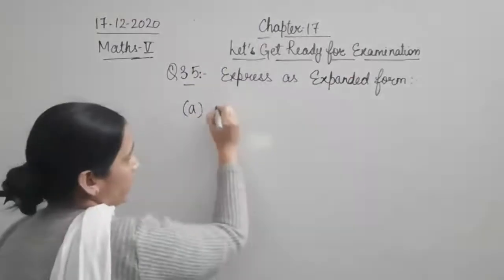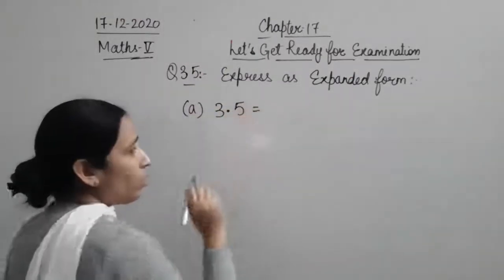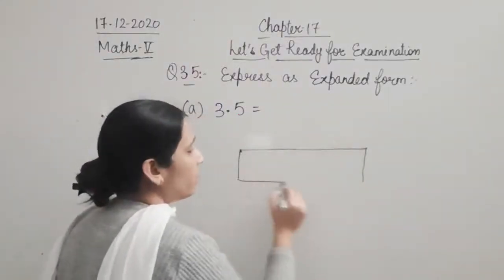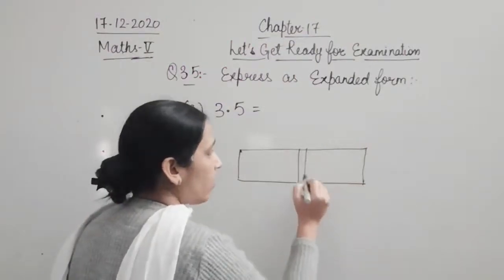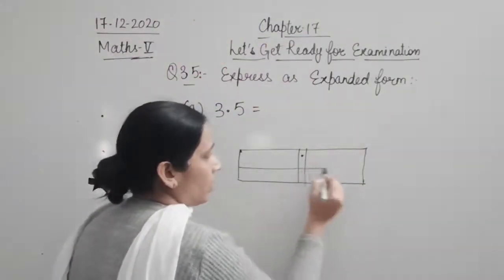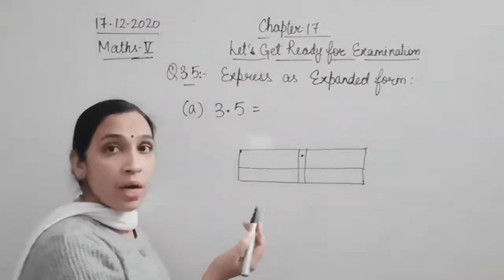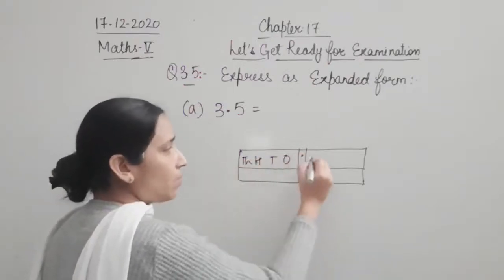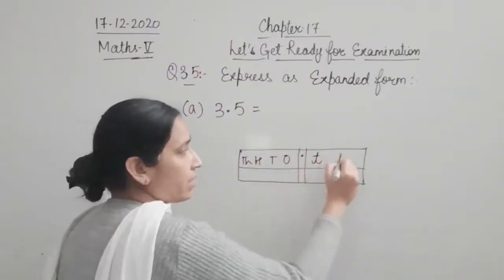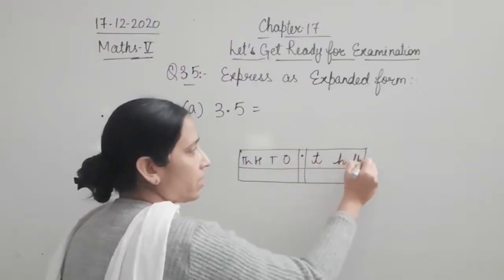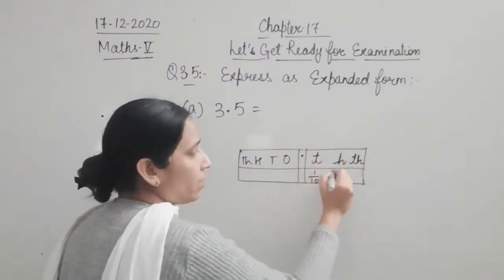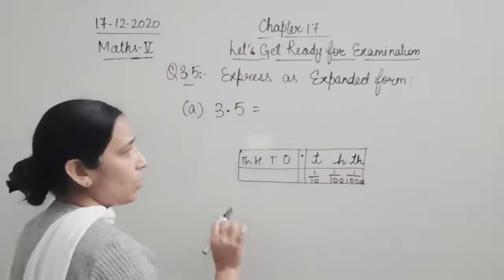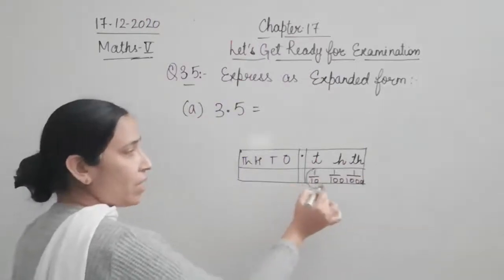For writing in expanded form, it is very important to know the place values of a decimal number. Before the decimal point you have the same places: ones, tens, hundreds, thousands. But after the decimal point, the first place is tenths (1/10), the second is hundredths (1/100), and the third is thousandths (1/1000). These are the place values we are going to use.